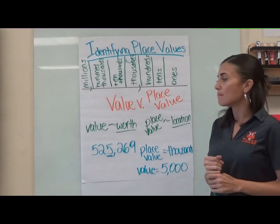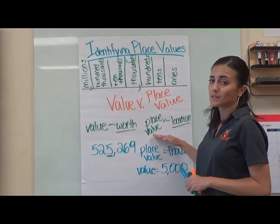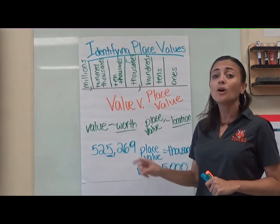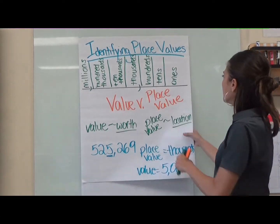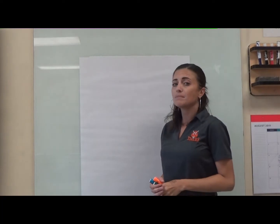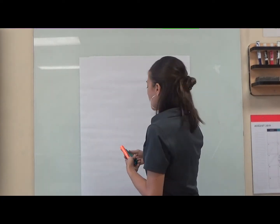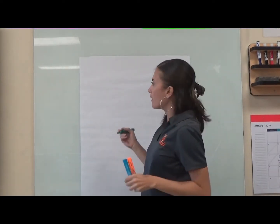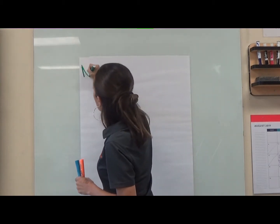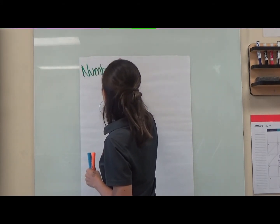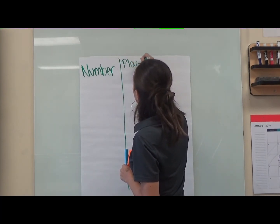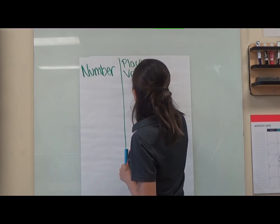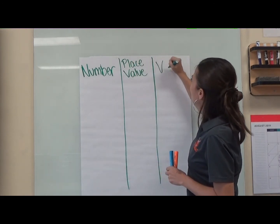That's going to be a major key to remember: value versus place value. If you're having trouble understanding, rewind and watch this over again. Now let's practice a little bit. We're going to review a couple of different examples to make sure we really get this. Let's make a chart — please do this on your paper at home — we're going to have a number, the place value, and the value.